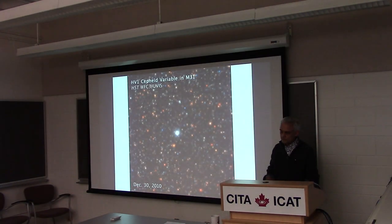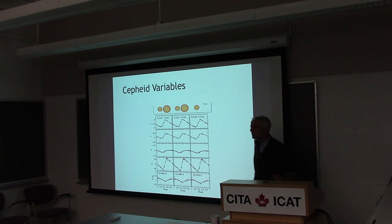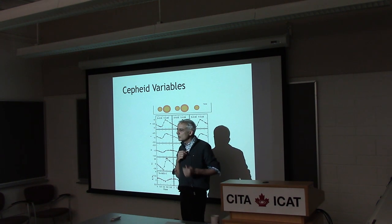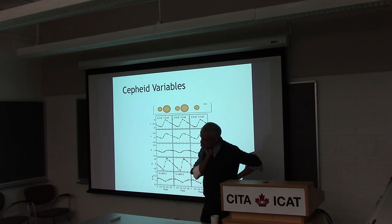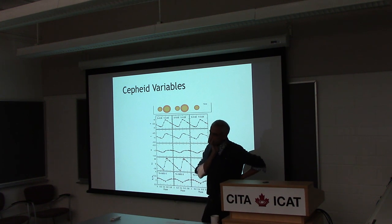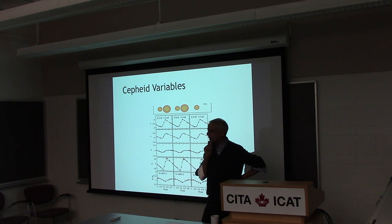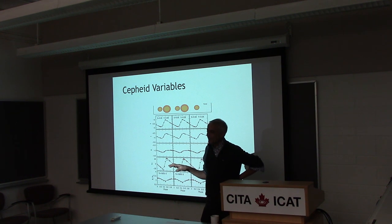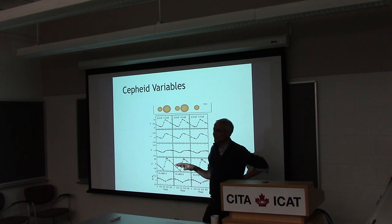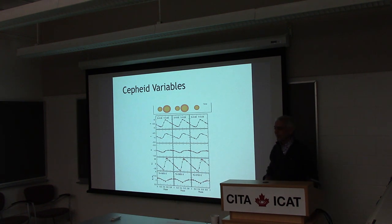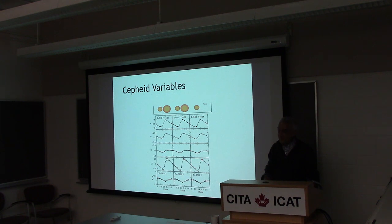Another way to test the stellar models is to look at Cepheids in binaries and measure the mass independently. There's one spectacular case in the LMC where everything hangs together at the 3-4% level — the stellar evolution mass and dynamical mass are bang on. Jeremy Saxton took the stellar evolution code MESA, put in a screened modified gravity, and generated post-main-sequence evolution curves showing when the star goes off the main sequence and pulsates within the instability strip.